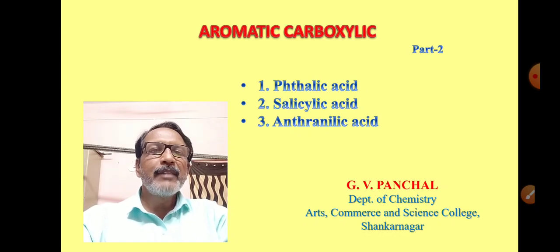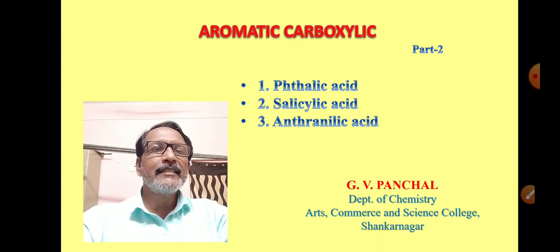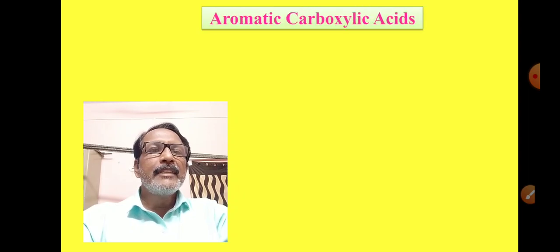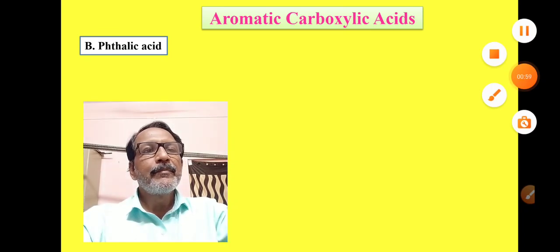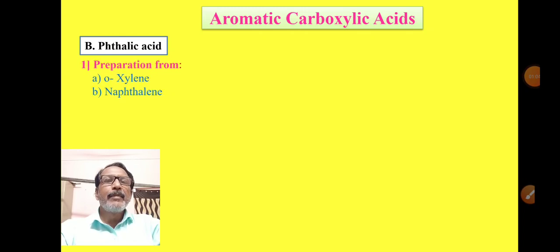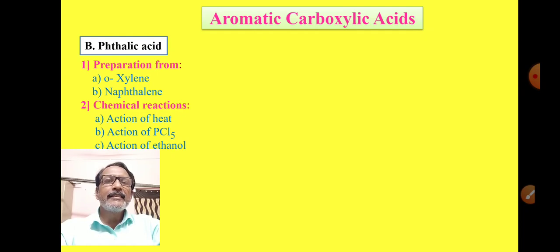For our syllabus there are four aromatic carboxylic acids: benzoic acid, phthalic acid, salicylic acid, and anthranilic acid. Today we will cover phthalic acid — its preparation from o-xylene and naphthalene, and chemical reactions including action of heat, phosphorus pentachloride, and ethanol.